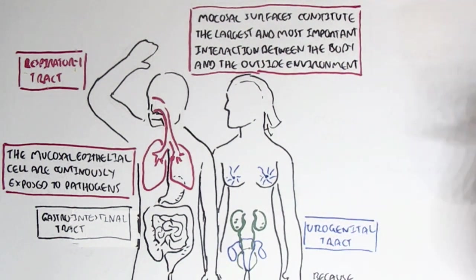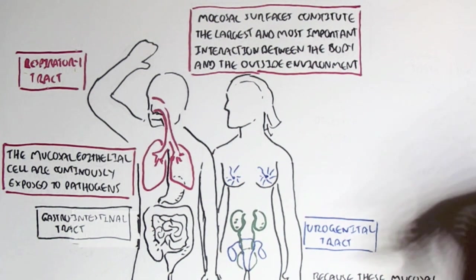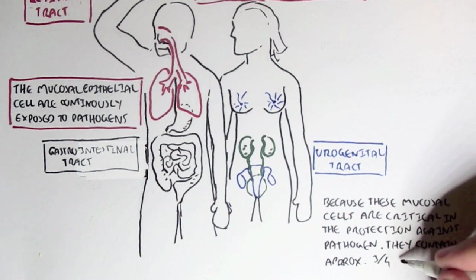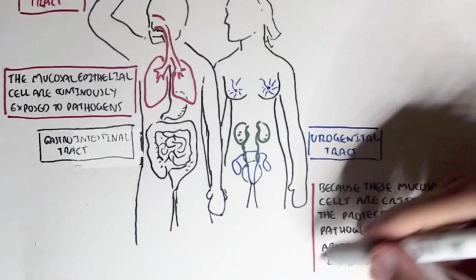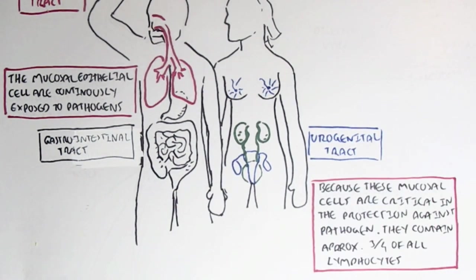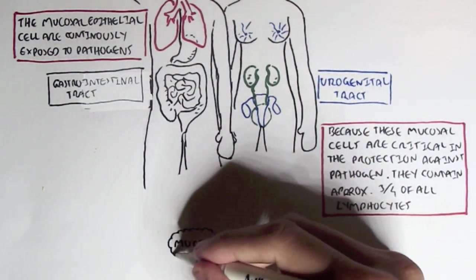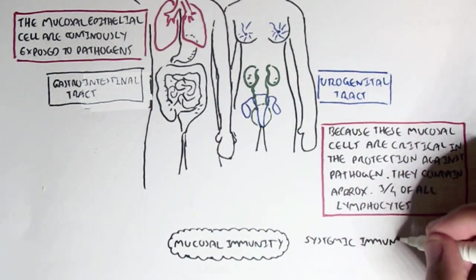Because these mucosal cells are critical in the protection against pathogens, they contain approximately three quarters of all lymphocytes, so the T and B cells. They predominantly reside beneath the mucosal surfaces or within the mucosal surfaces lining the respiratory tract, gastrointestinal tract and urogenital tract. And that is why we have what's called a mucosal immunity as well as a systemic immunity.